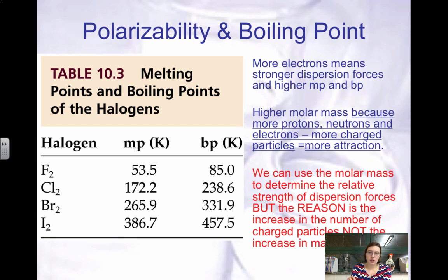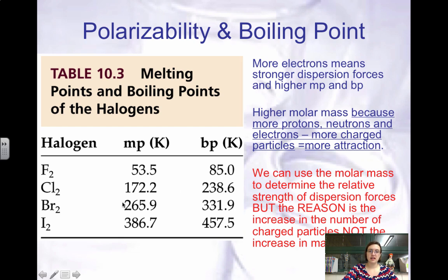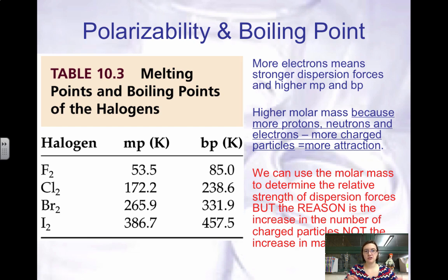With polarizability and boiling point: the more electrons, the stronger the dispersion force. Remember that intermolecular forces are what keep solids, liquids, and gases together. When you have stronger dispersion forces, you have to put more energy in to melt or boil the substance, so the stronger the dispersion force, the higher the melting point and boiling point. Looking at the halogens, as you go down the halogen group, you have more electrons and increasing molar mass, so your melting point and boiling point increase. The reason is increasing charged particles — not molar mass — though molar mass correlates with number of electrons.